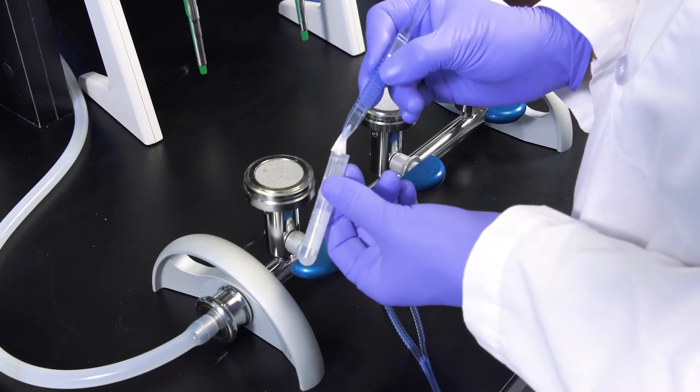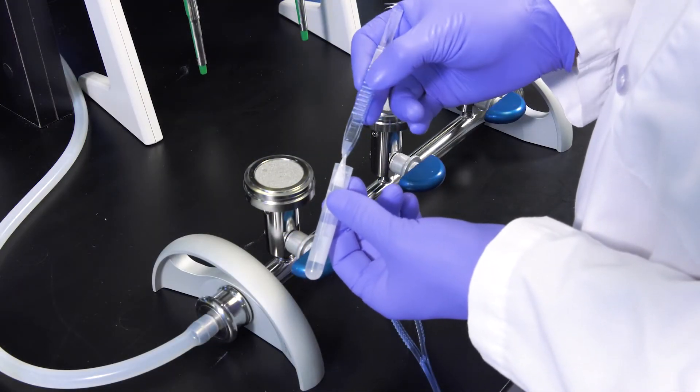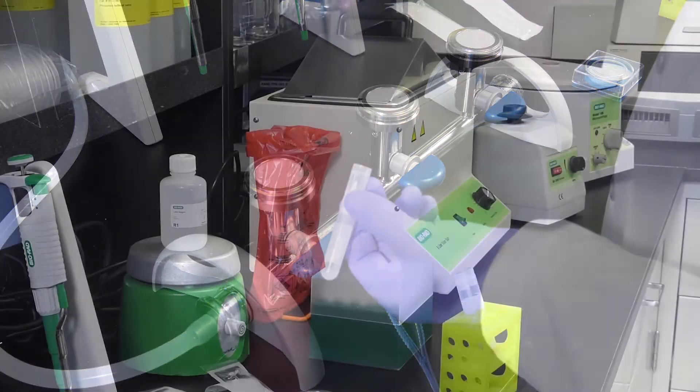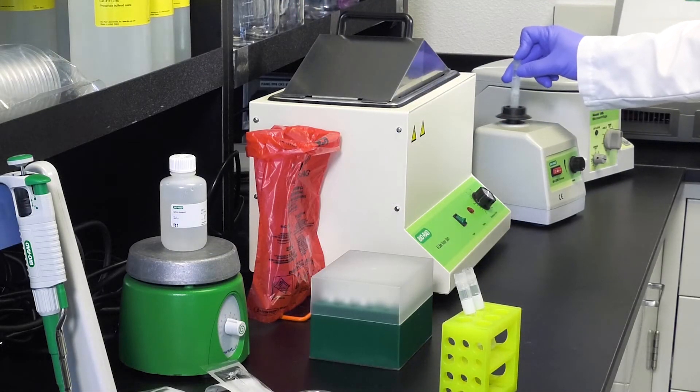Using tweezers, place the membrane in the cryotube containing two milliliters of R1 solution. Vortex for 20 seconds and check that the membrane is totally immersed in the R1 solution.